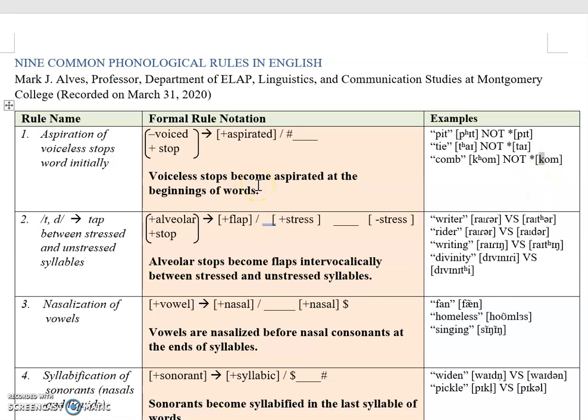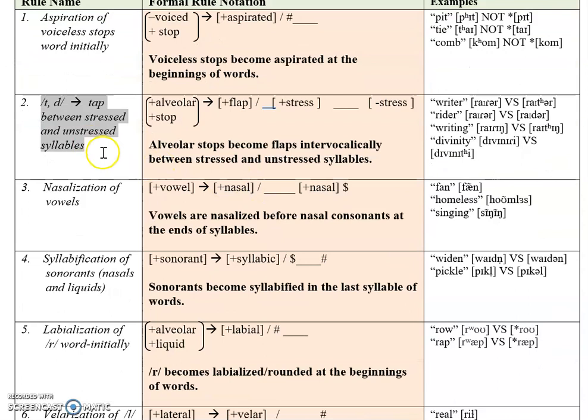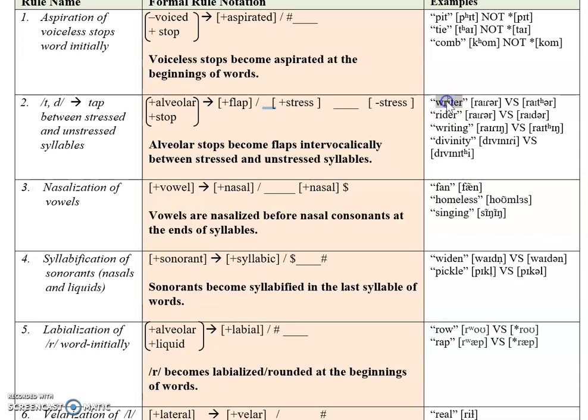The next rule: /t/ and /d/ — the sounds /t/ and /d/ — become a tap or flap between stressed and unstressed syllables. The terms 'tap' and 'flap' are both fine. In the formal notation, /t/ and /d/ are both alveolar stops and they become [+flap] in the environment of being between a stressed and an unstressed syllable.